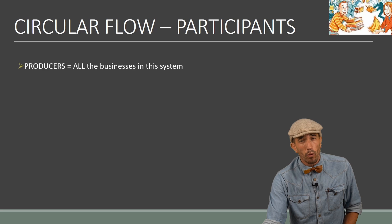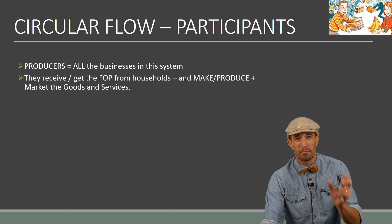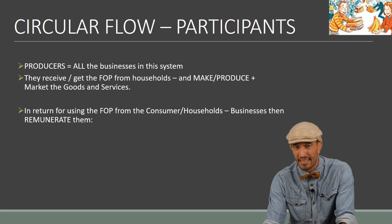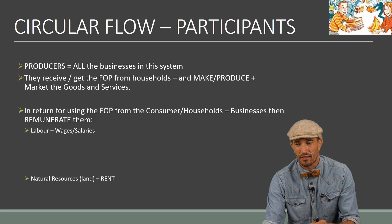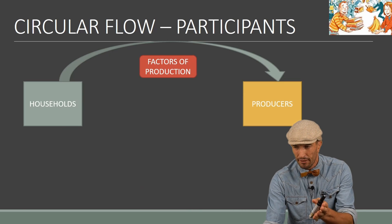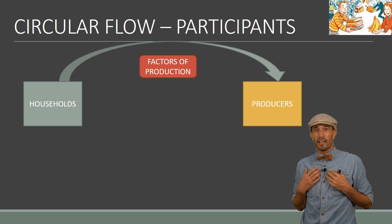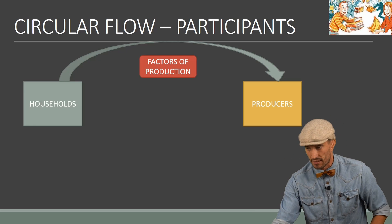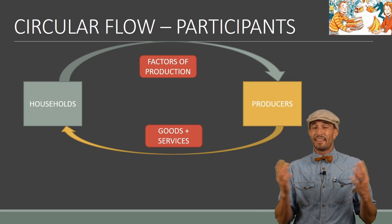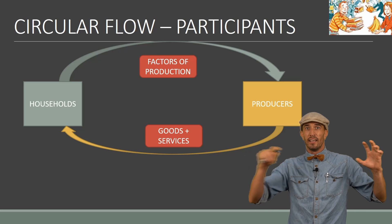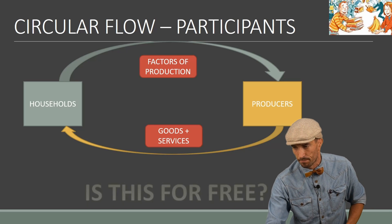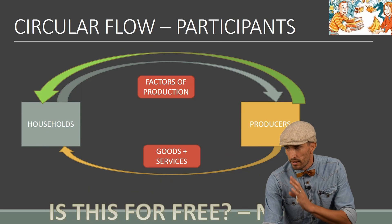The producers are all the businesses in the system. They receive the factors of production (FOP) and produce final goods and services. In return, they receive payment for goods sold to consumers, so that they can pay consumers for the factors of production. For example, I go to work at a business — I give my labor — and the producer converts it into goods and services. This flow of goods, services, and factors of production with no money involved is called the real flow.